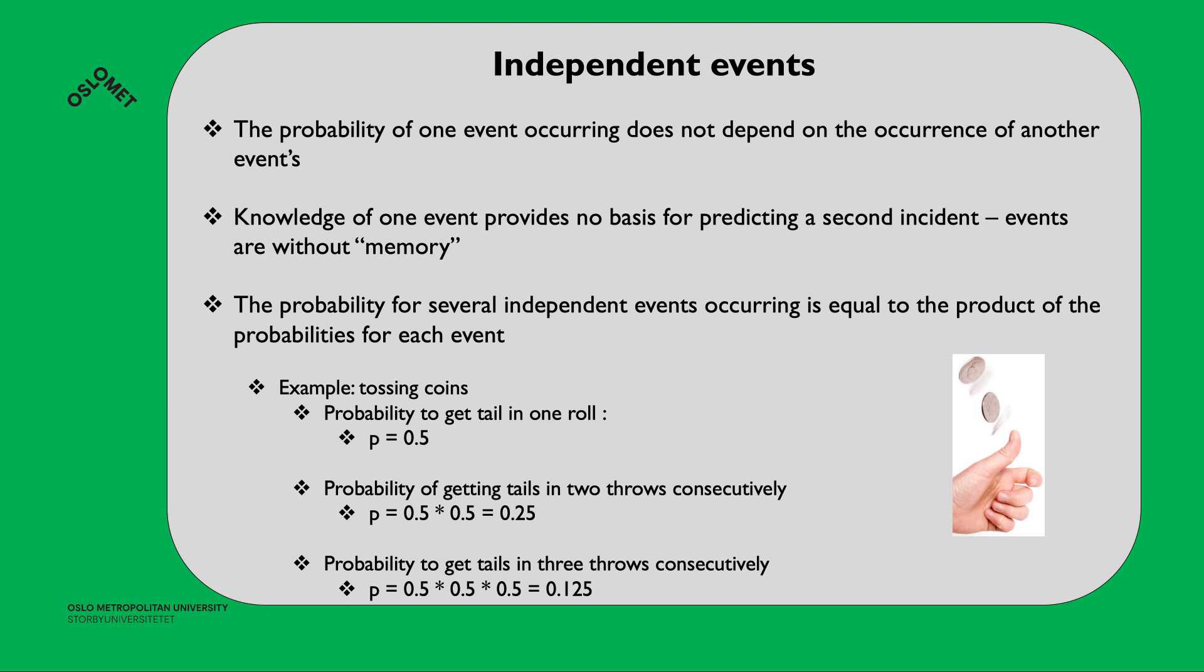If you're tossing a coin, the probability of getting tail in one roll is 0.5 or 50%. The probability of getting tails in two throws consecutively is 0.5 times 0.5, which is 0.25 or 25%. The probability of getting tails in three throws consecutively is 0.5 times 0.5 times 0.5, which is 0.125 or 12.5%.